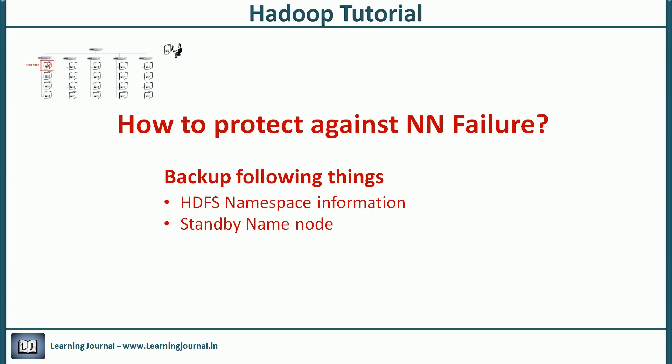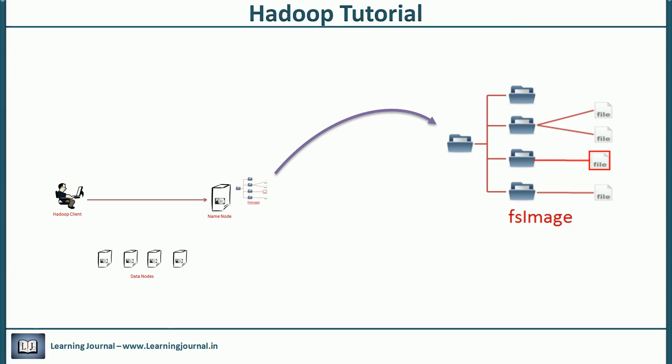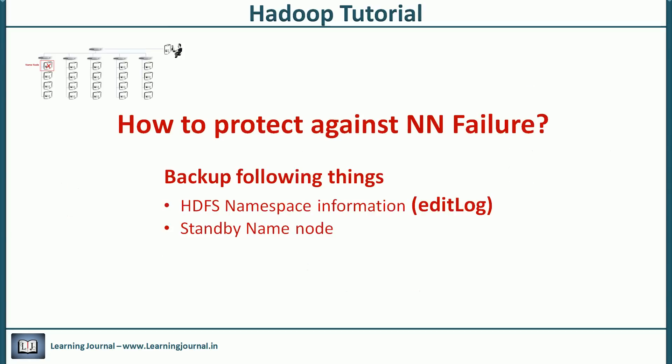Now let's come to the namespace information backup. We already learned that name node maintains the entire file system in memory and we call it in-memory fsimage. Name node also maintains an edit log in its local disk. Every time name node makes a change in the file system, it records that change in the edit log. The edit log is like a journal ledger of name node. If we have the edit log, we can reconstruct the in-memory fsimage.